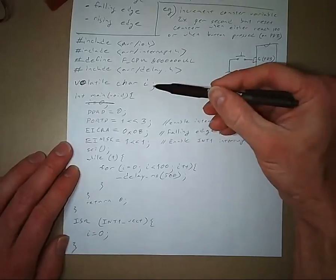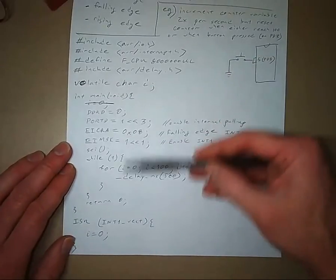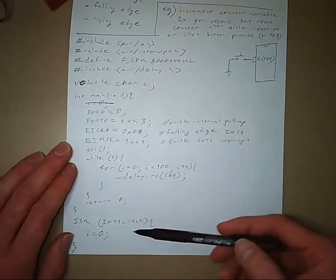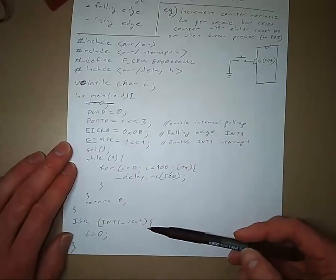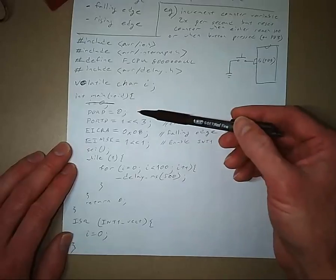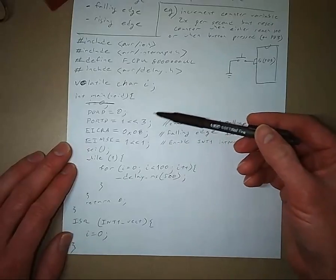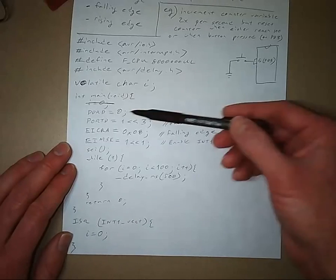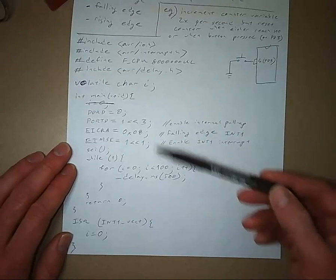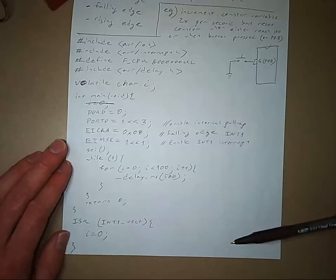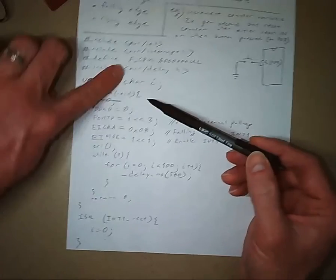So the variable i has to be global because it's used in both of these functions. And if it wasn't an interrupt service routine, if it was just a function that we called, then it would be better off for us to pass it the variable value. So we would declare i inside of main and then it would be a local variable. But since it's an interrupt and we're not actually calling it out of main, then in order for that data to be shared between the two functions, it has to be a global variable. So that's why it's a global variable.